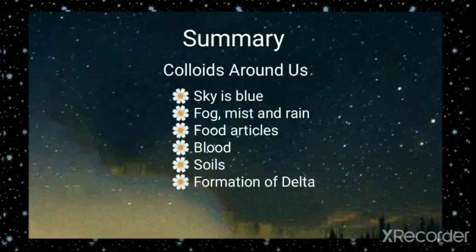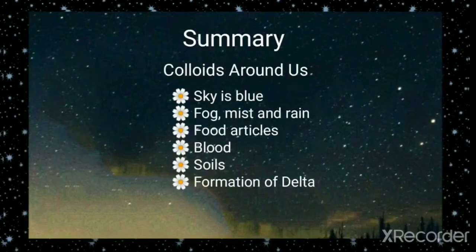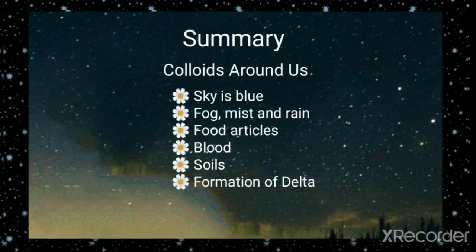These are some examples of colloids which we find around ourselves. In this lesson, we have discussed why the sky is blue, the formation of fog, mist, and rain, food articles which are actually colloids, blood as a natural colloid, soil, and the formation of a delta.